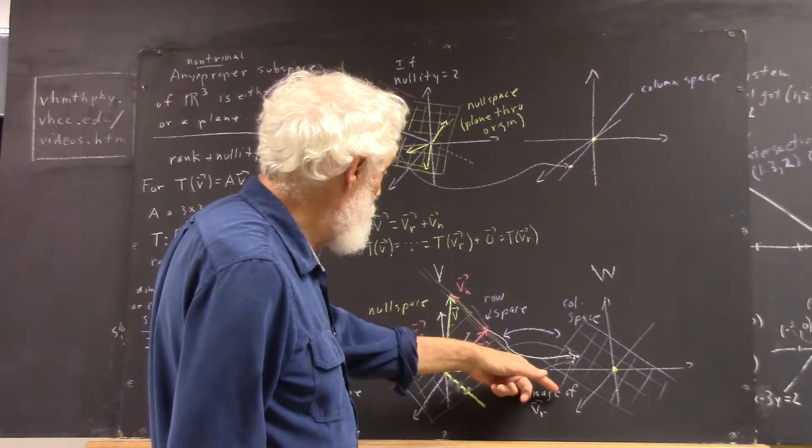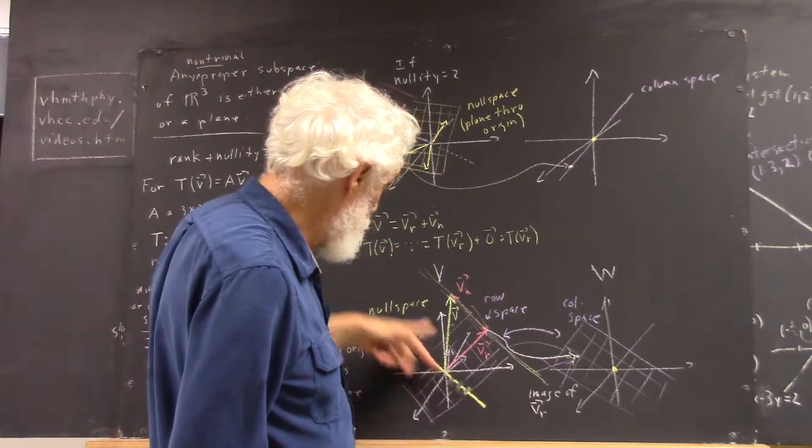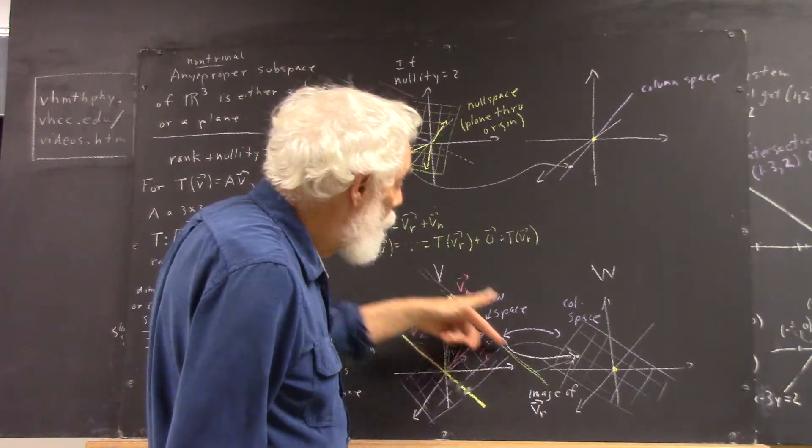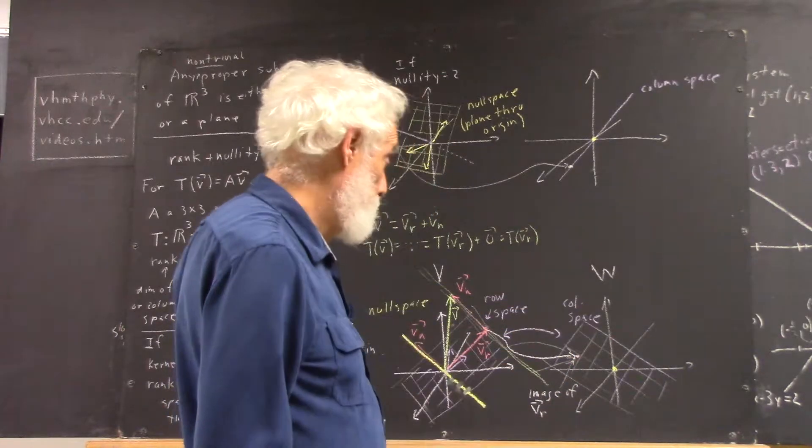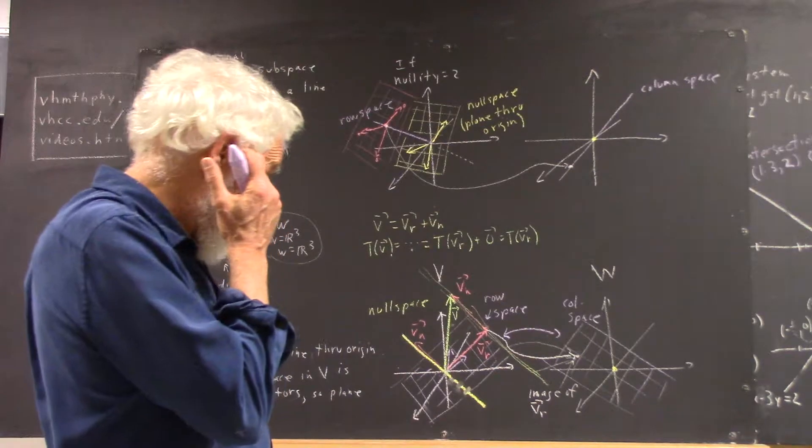any point along this green line here that is through Vr, through the Vr point, parallel to the Vn vector, parallel to our null space, all these points are going to collapse to this point on this plane.